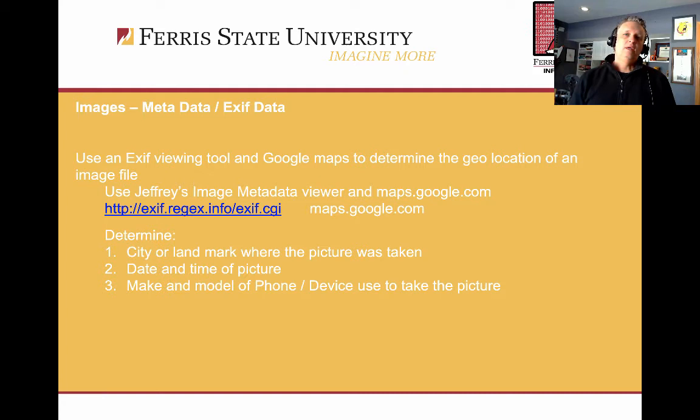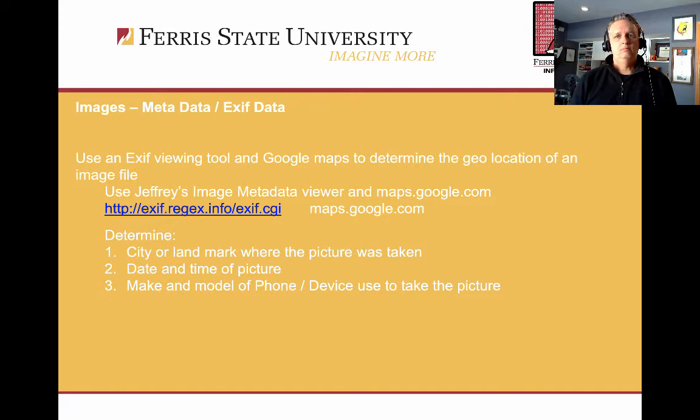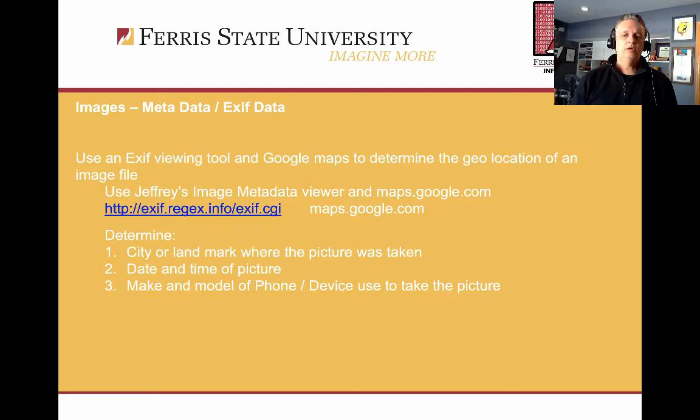In our competition, I recommend you take note of this site: exif.regex.info. This is a free web-based utility where you can upload an image file — such as a GIF, JPEG, or PNG — and the site will display the metadata that's available. We're also going to use maps.google.com to take the latitude and longitude data discovered through this tool and plot it on a map to determine where the picture was taken.